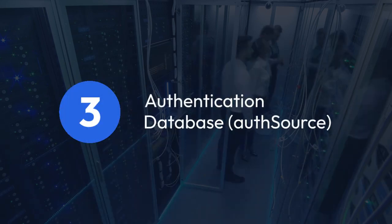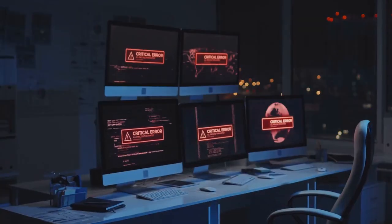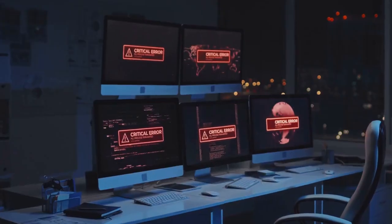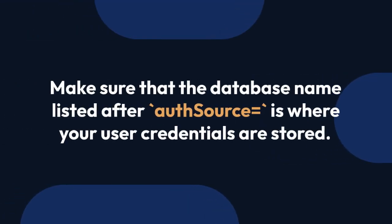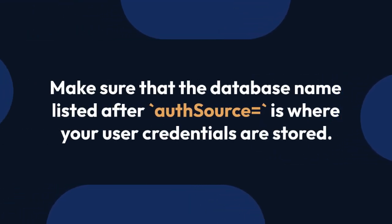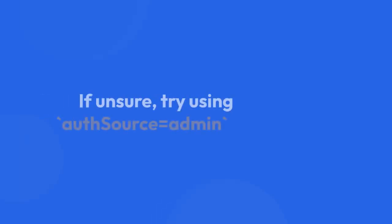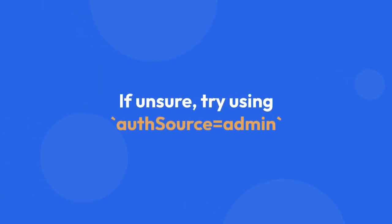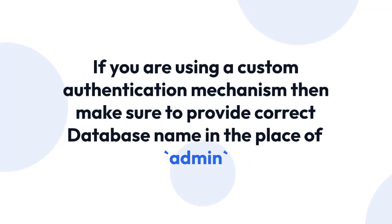Step 3: Authentication database — authSource. Incorrectly specifying the authSource parameter can lead to authentication failure. Make sure that the database name listed after authSource= is where your user credentials are stored. If unsure, try using authSource=admin, as this is the default. If you are using a custom authentication mechanism, make sure to provide the correct database name in place of admin.